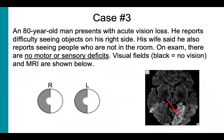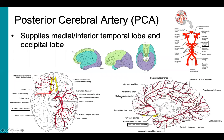Case number three: an 80-year-old man presents with acute vision loss. He reports difficulty seeing objects on his right side. His wife said he also reports seeing people who are not in the room. On exam, there are no motor or sensory deficits. We have his visual fields shown on the bottom left, where dark gray means no vision, and his MRI is also shown. Which artery is involved? The posterior cerebral artery is the correct answer, and this is also part of the posterior circulation.